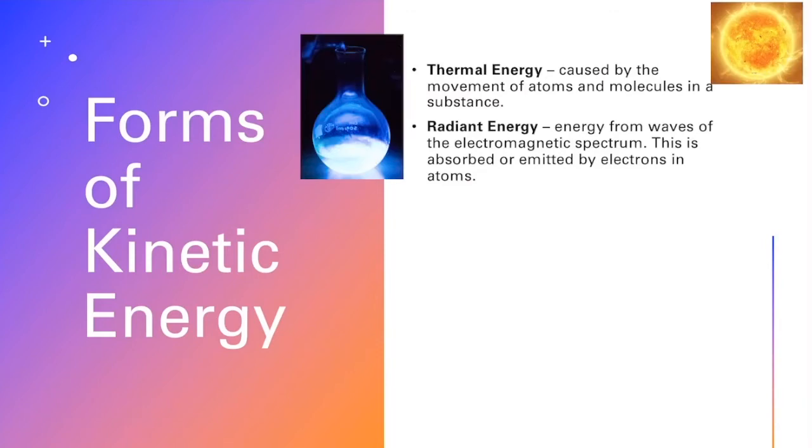Some examples of both of these types of energy would be the sun. First of all, it's radiant because it's giving off light, and it's also giving off thermal energy. And then this other reaction that's occurring in this flask is a luminol reaction, and that's actually an exothermic reaction. It's giving off heat and it's radiant because it's also giving off light.